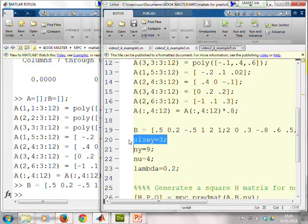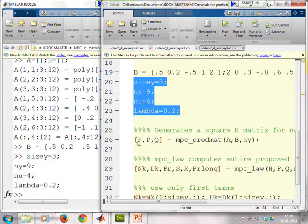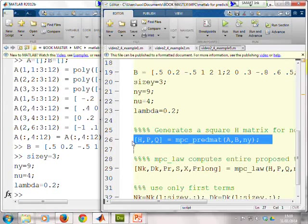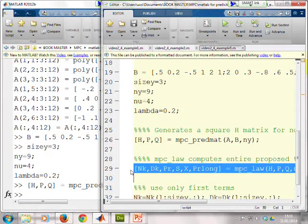Size Y equals 3 because it's 3 by 3. Put in my N_y, my N_u and my Lambda. You'll see the prediction matrix statement is identical. Nothing changed. You'll see the control law computation is identical.